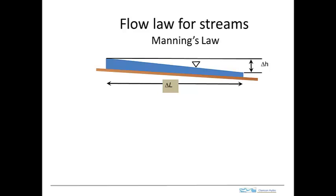The hydraulic gradient in a stream is the change in water elevation, which is the change in head, over the change in length. So essentially the slope of the water surface gives us the hydraulic gradient.